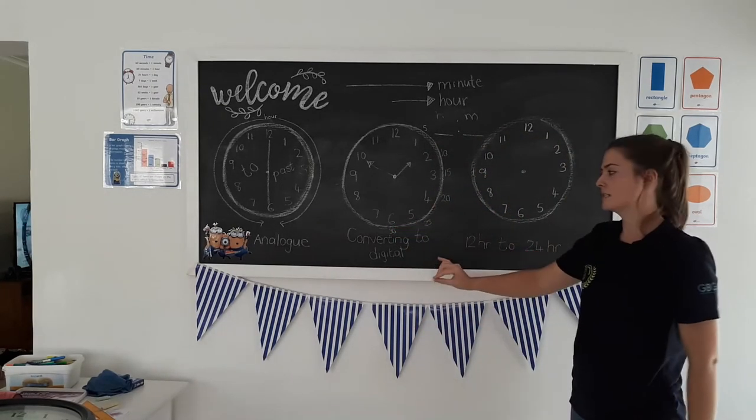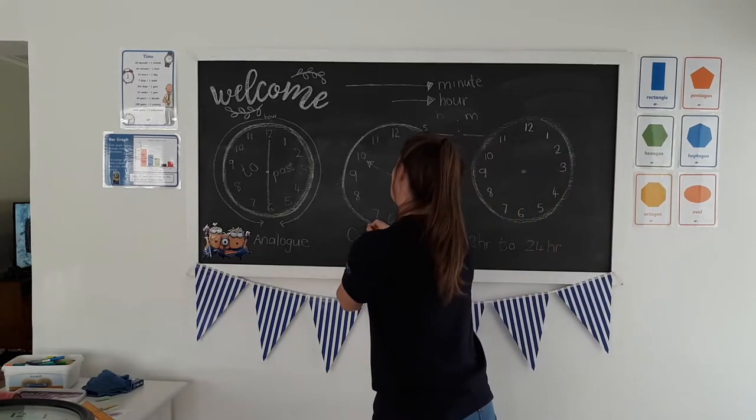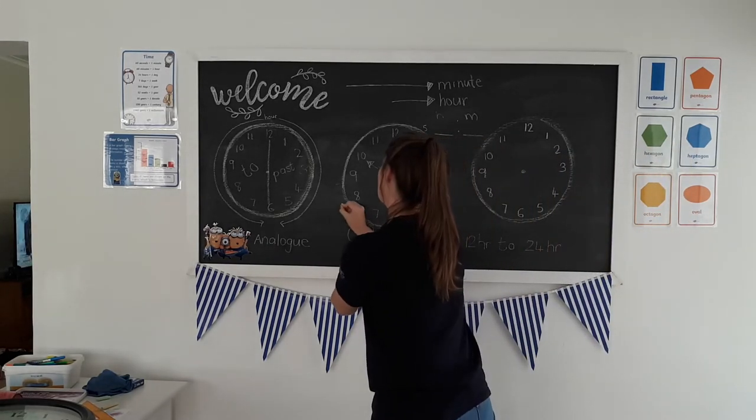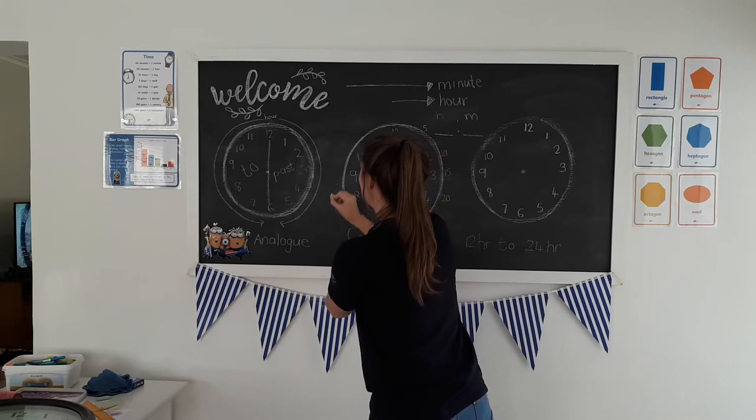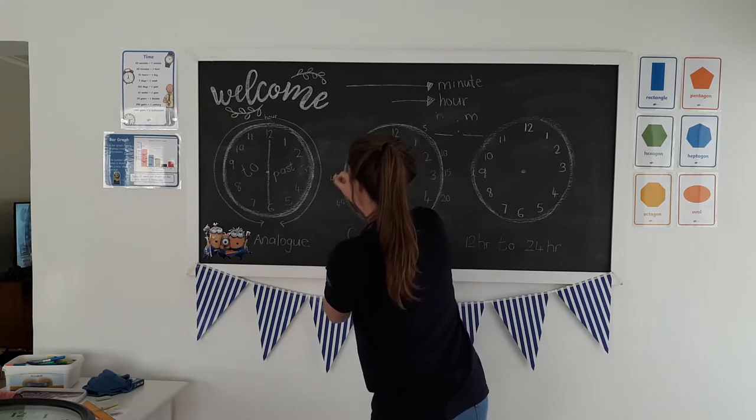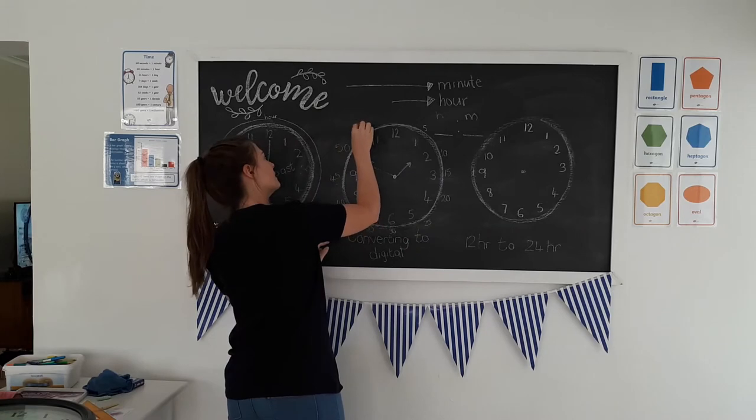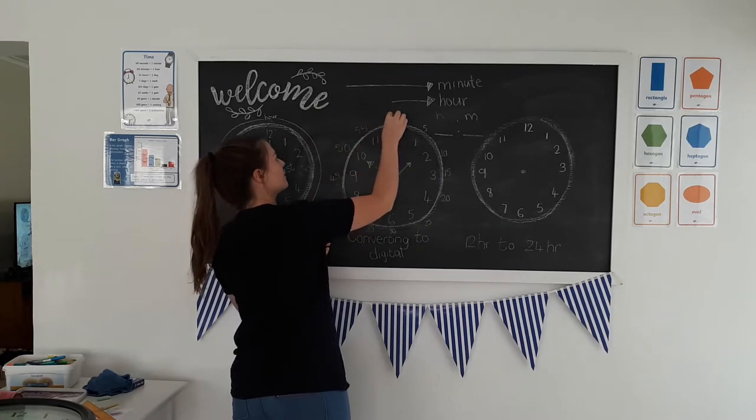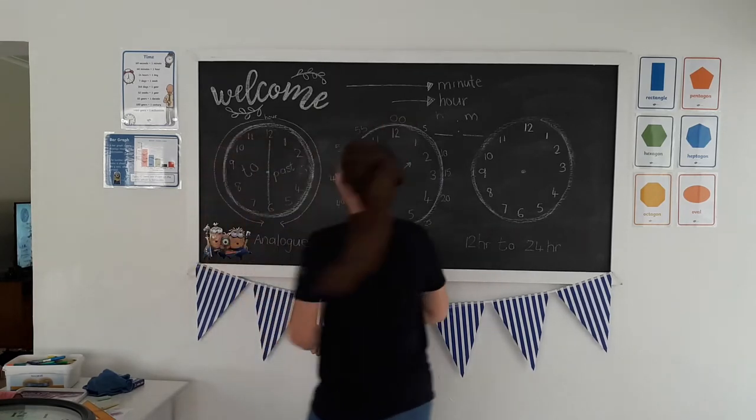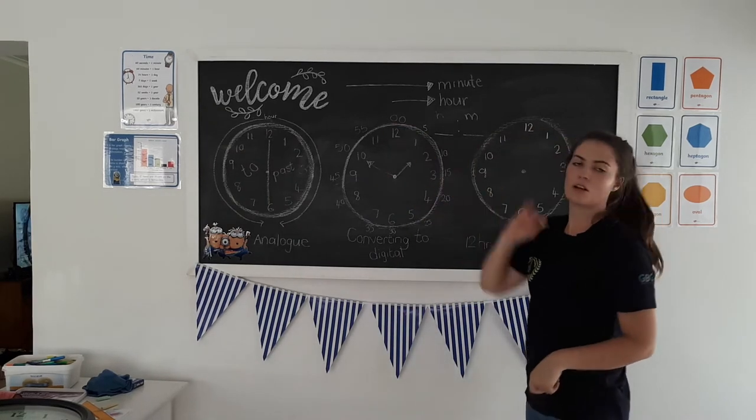When you do digital time, it changes slightly. We still go five past, ten past, quarter past, twenty past, twenty-five past, half past. But this clock is slightly different. We go thirty-five, forty, forty-five, fifty, fifty-five, and o'clock. At o'clock there are no minutes.